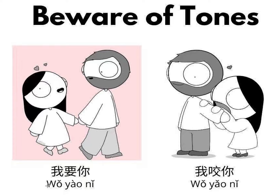So what did we learn? 要 is a very good word to know — an essential Chinese word. 要, 你 — you. 我要你 — I want you.